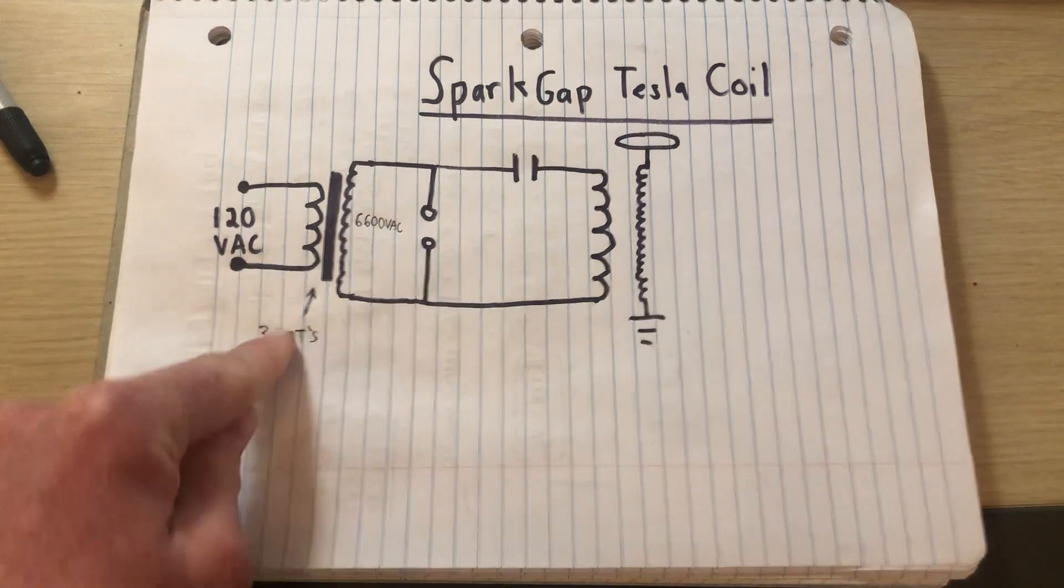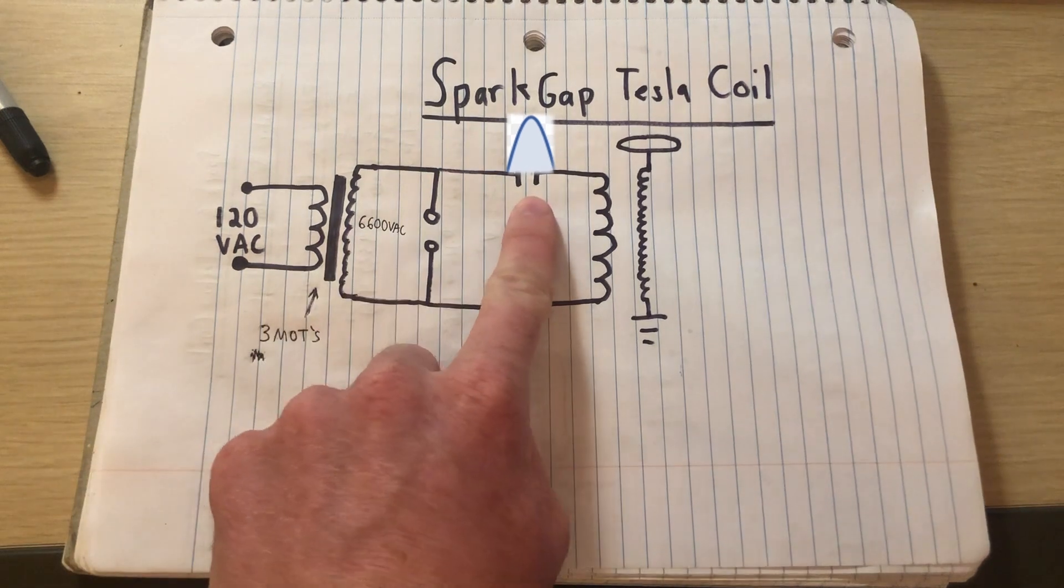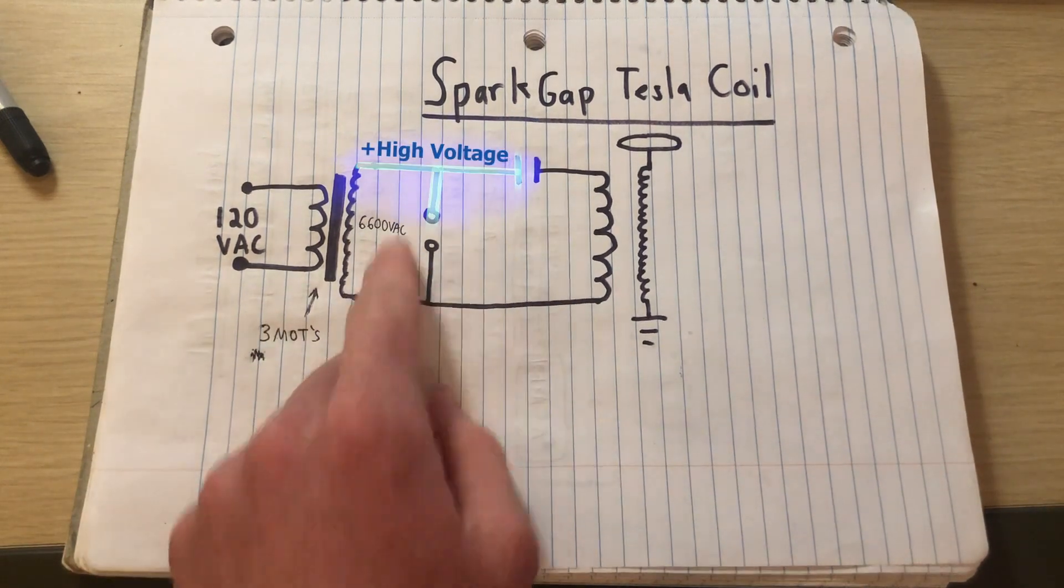So it all begins with the high voltage power supply, and the power supply charges the capacitor to the breakdown voltage of the spark gap.